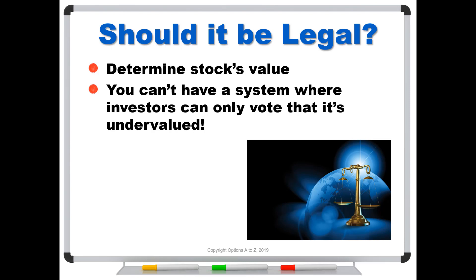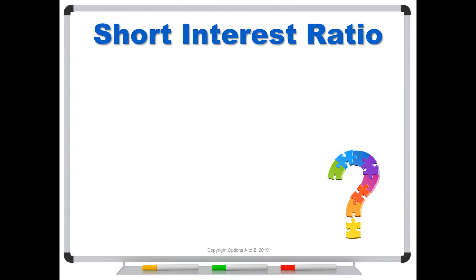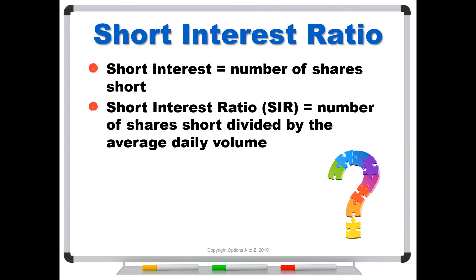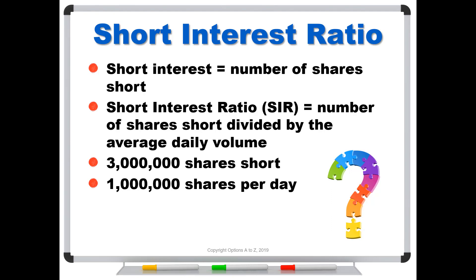So what is the short interest ratio? First, short interest is simply the number of shares that are short. If a stock has 10 million shares outstanding and 1 million are short, the short interest is 1 million shares. The short interest ratio, or SIR, is the number of shares short divided by the average daily volume — calculated over a recent period like a week, 10 days, or 30 days. For example, if there are 3 million shares short and the stock trades 1 million shares per day on average, the SIR is 3 — meaning it would take about three days of trading to clear out all those short shares.